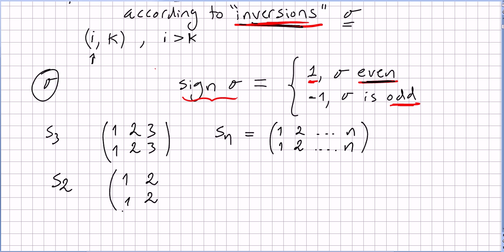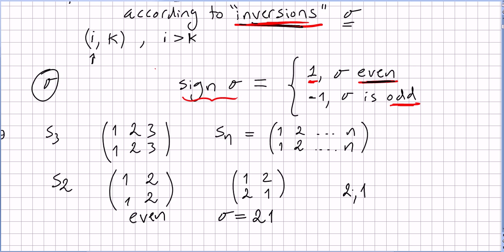Now let us see something even easier: S2. We have one two — we have the identity, and then we have the permutation where one goes to two and two goes to one. In cyclic notation, sigma will be two one. We only have one inversion because two is to the left of one, so there is only one inversion. Since there is only one inversion, we have an odd number of inversions.